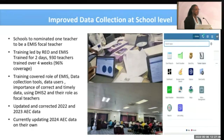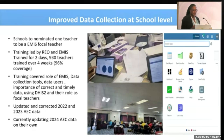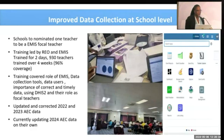Looking at data elements that were not properly understood by schools, we went back — because they had already updated their 2022 and 2023 annual education census data — to check the validity and reliability of that data. If during training they understood a question differently from how they had responded, we corrected and fixed it. So by December we had an updated version for the 2022 and 2023 annual education census. Schools are currently updating their annual education census form for 2024, and the response rate is already above 50%, which we are grateful for.